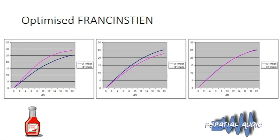The middle curve shows the result of Frankenstein processing: it's a lot better, especially in the central section — the most important part — but it actually slightly overcooks the required correction, putting high frequencies just inside the low frequencies. This shows that Frankenstein itself was slightly overcorrecting, as indeed was the original EMI circuit.